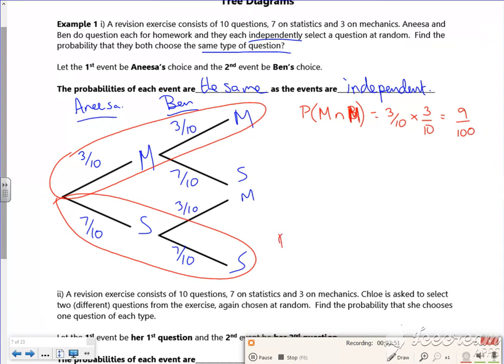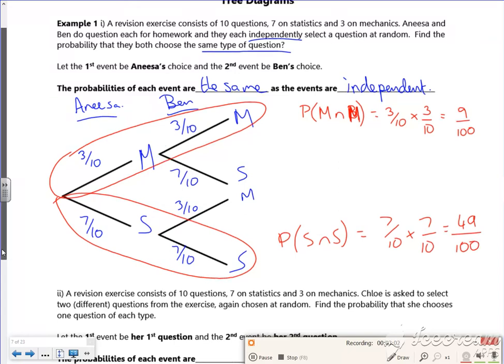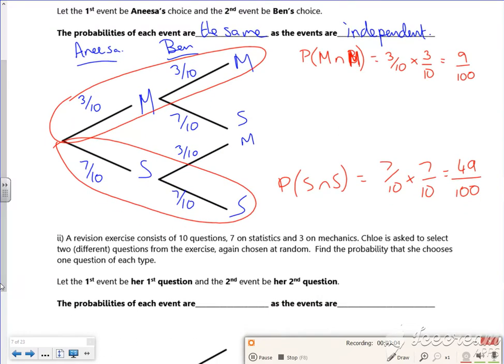And for this one, the probability of choosing stats and then stats is 7 out of 10 times 7 out of 10. So what we want is both of them added together. So it's going to be 9 out of 100 and 49 out of 100, which is 58 out of 100, which cancels down to 29 out of 50.